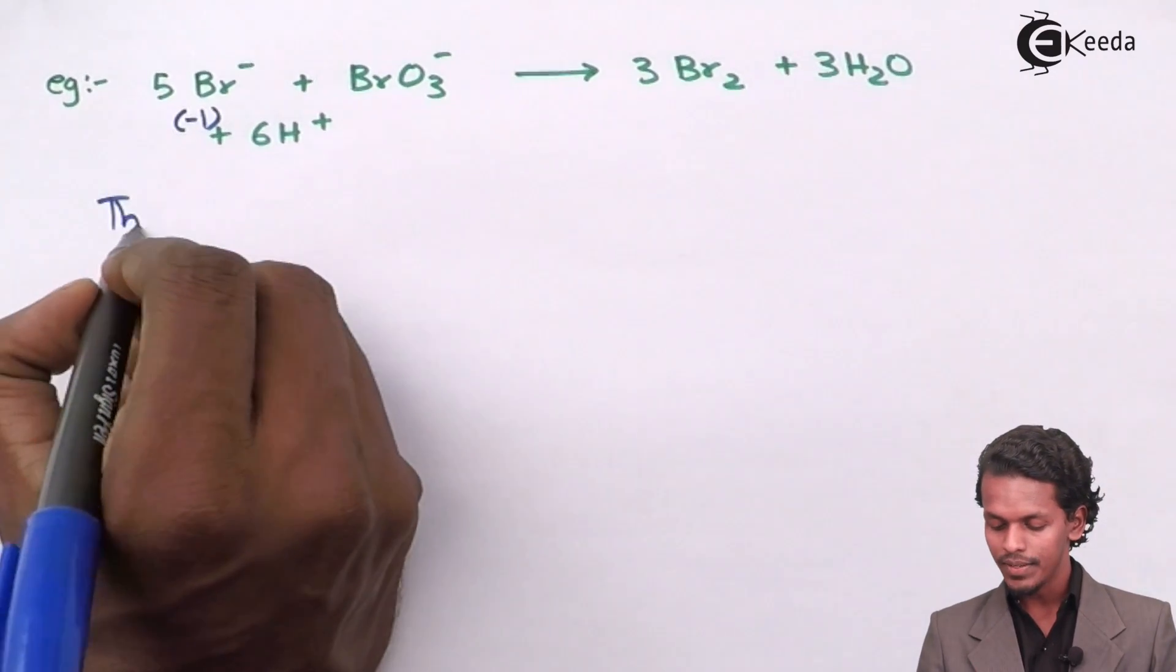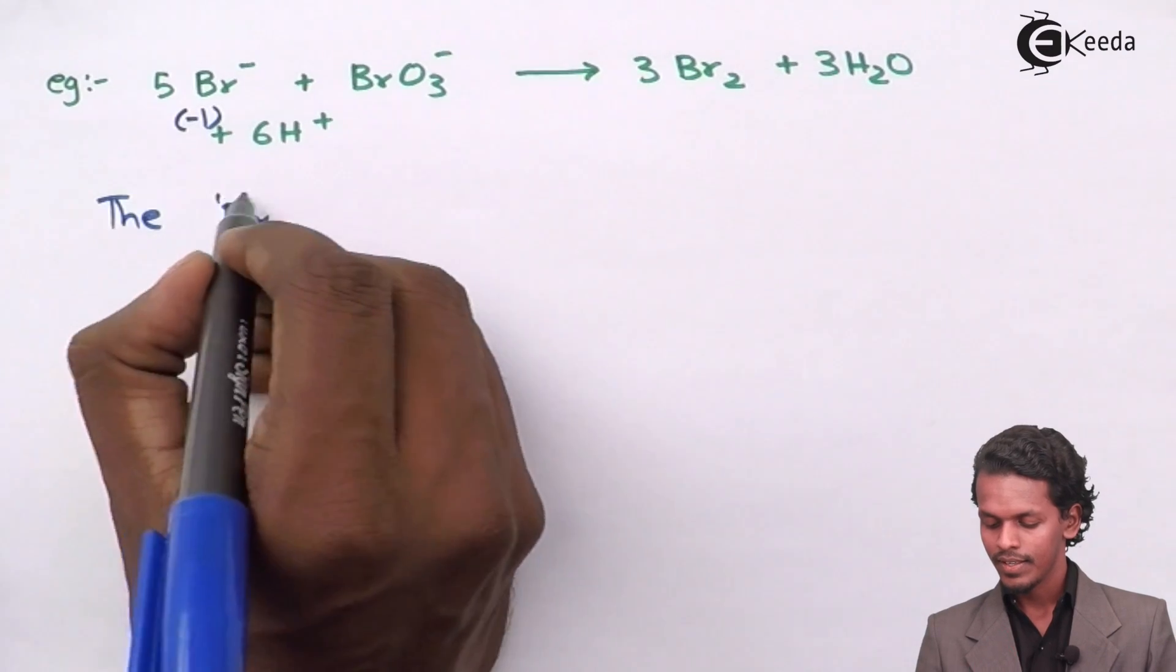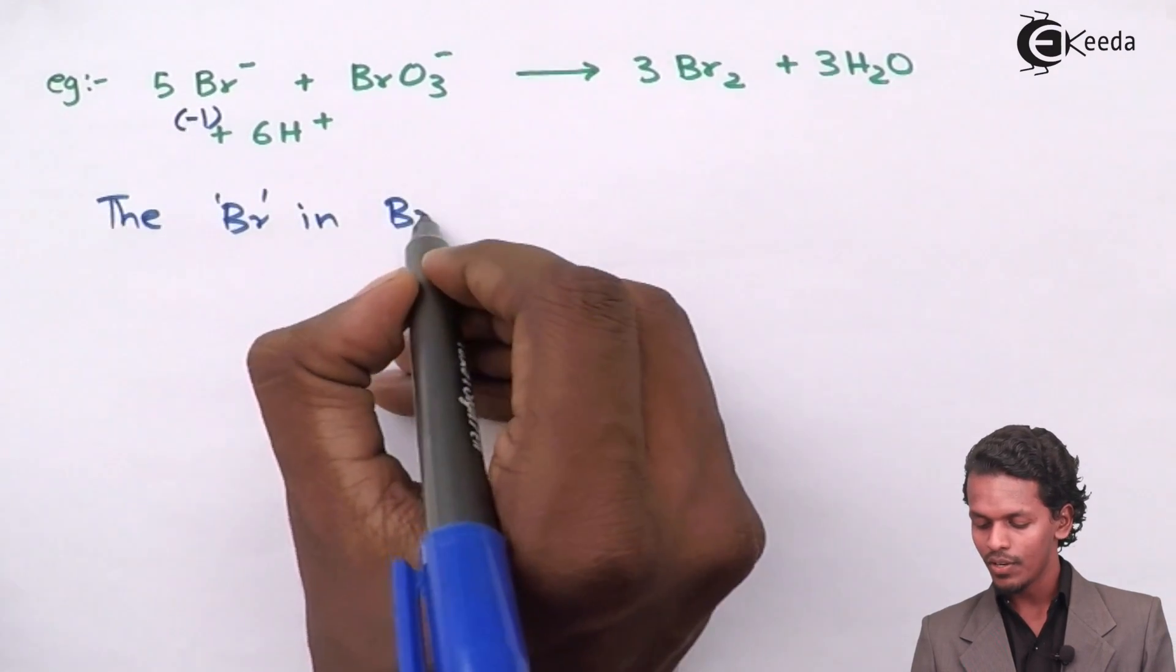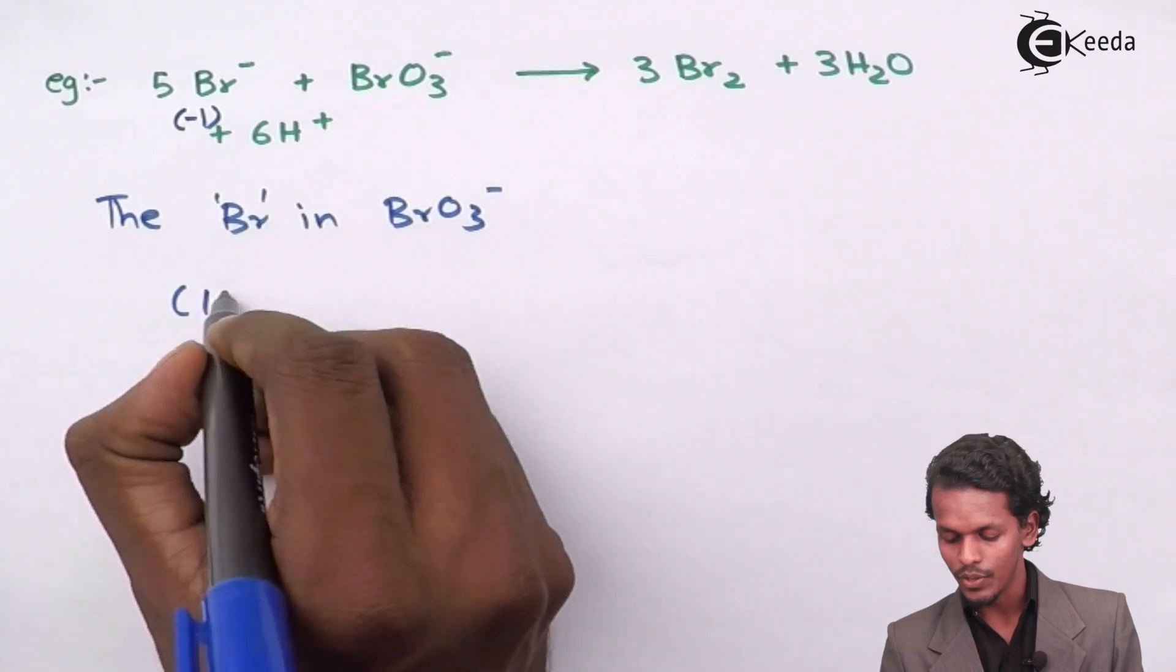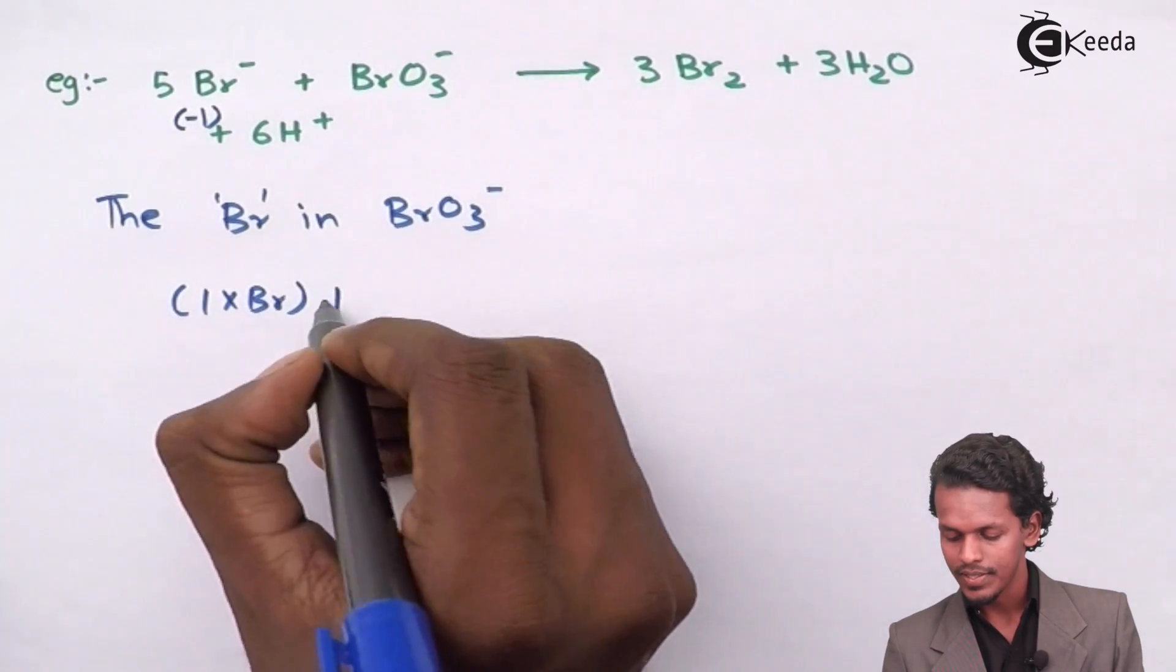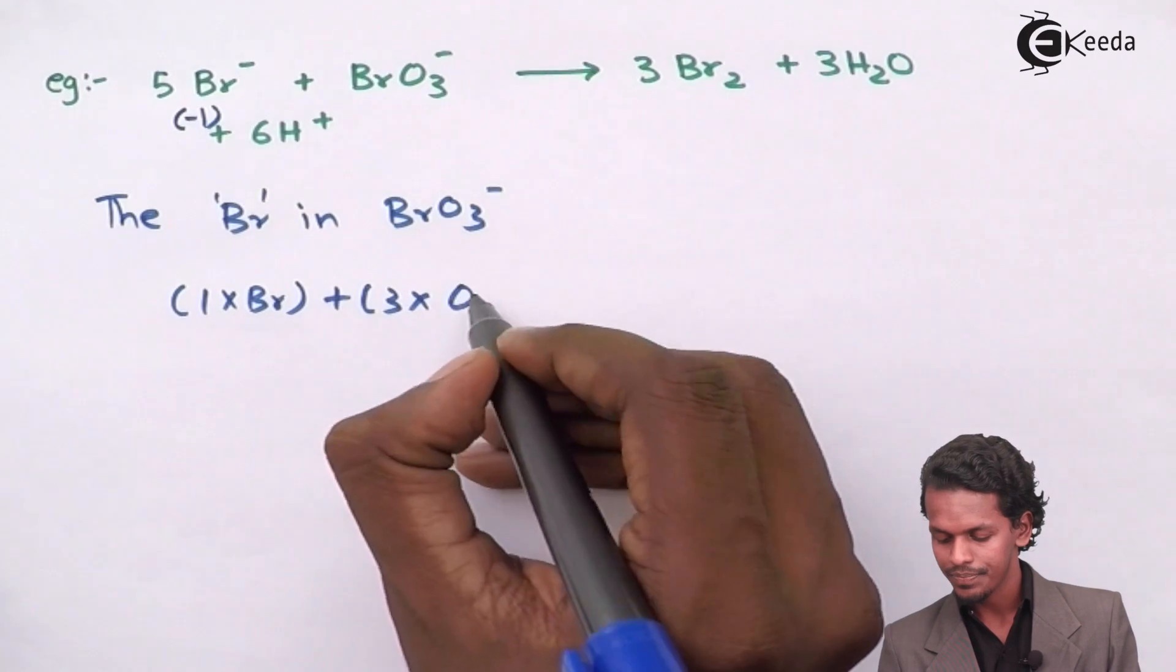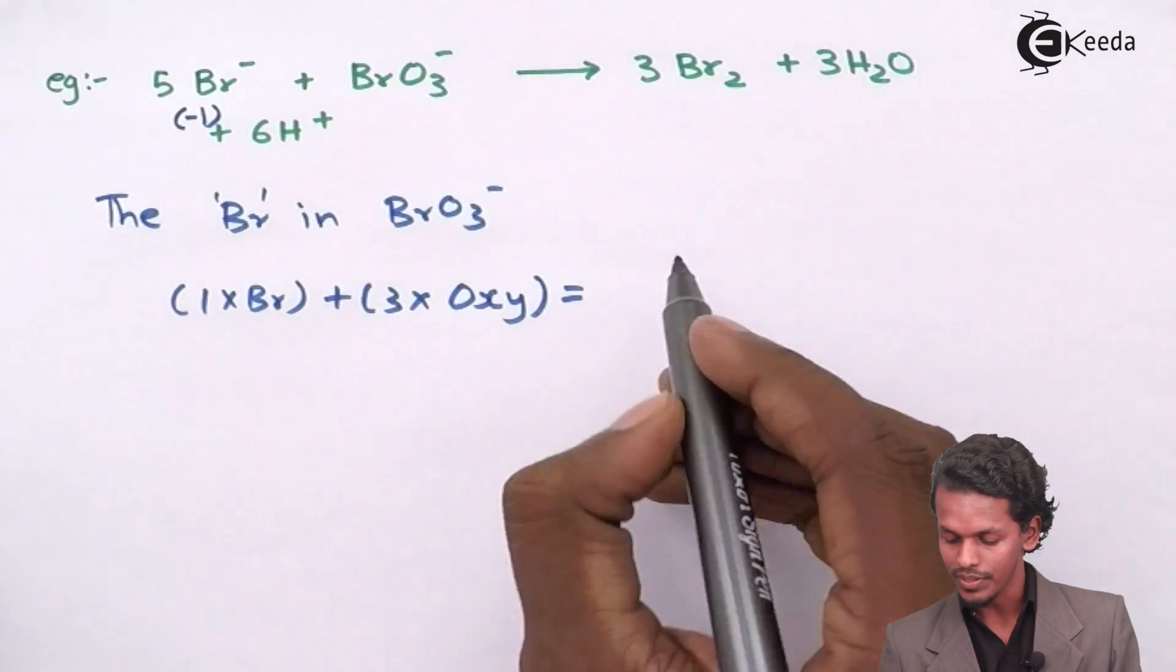How can we calculate the bromine in BrO₃⁻? It can be calculated as: I have considered 1 times Br plus 3 times oxygen and an overall charge of minus 1.